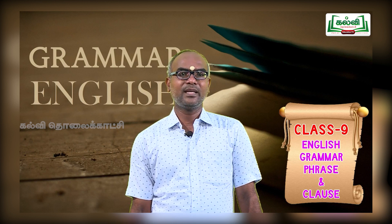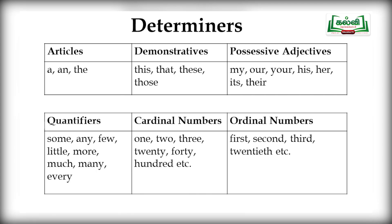Types of determiners: articles — a, an, the; demonstratives — this, that, these, those; possessive adjectives — my, our, your, his, her, its, their; quantifiers — some, any, few, little, more, much, many, every; cardinal numbers — 1, 2, 3, 20, 40, 100, etc.; ordinal numbers — 1st, 2nd, 3rd, 20th, etc. All these function as determiners.